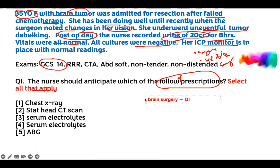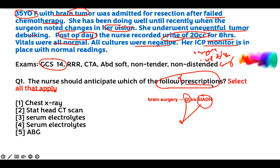After brain surgery, you're going to see either DI or SIADH — it can happen because of disruption to the pituitary gland pathway. Even a single infection can cause DI or SIADH, so don't limit yourself. There are two things that can happen. If it's DI, you know what to do. If it's SIADH, you know what to do. After you rewrite it, take your content with you.